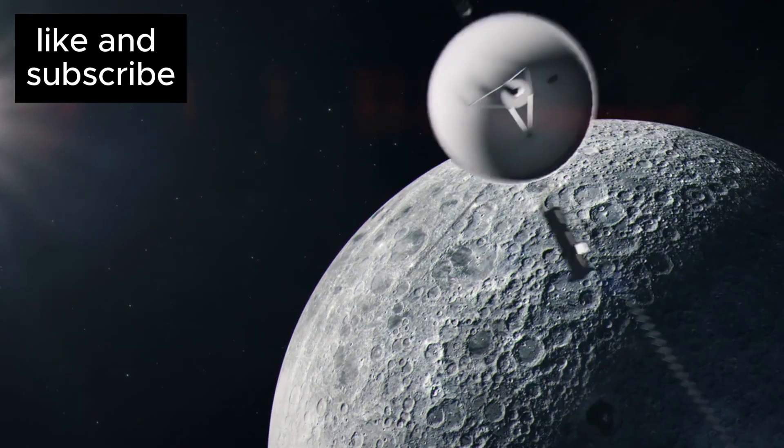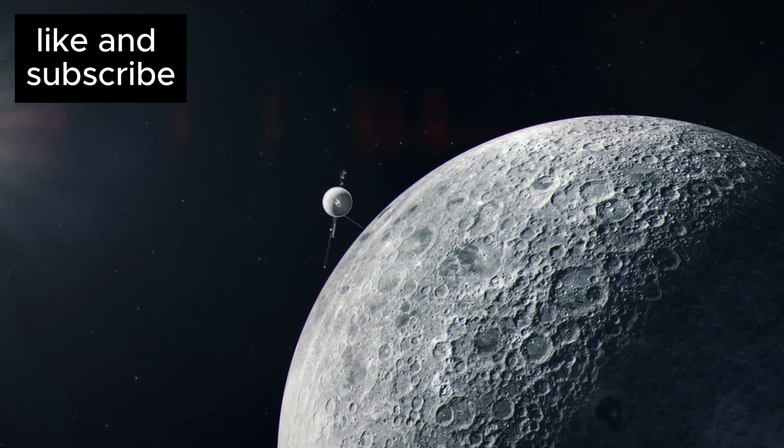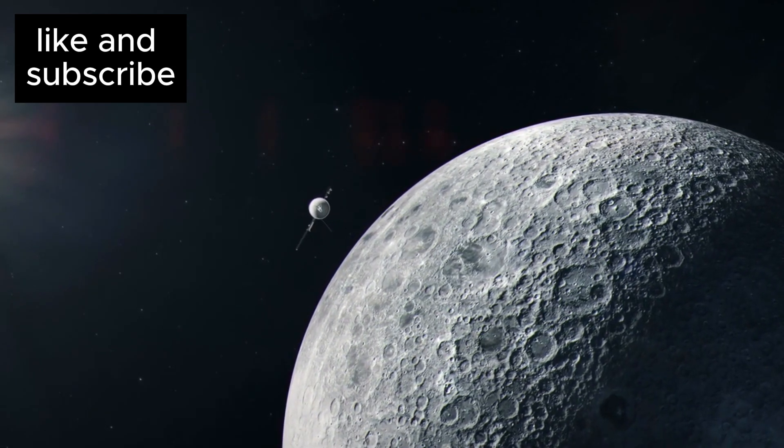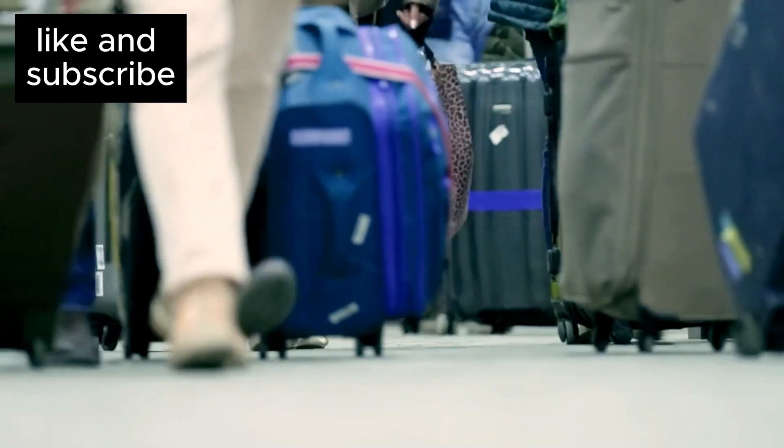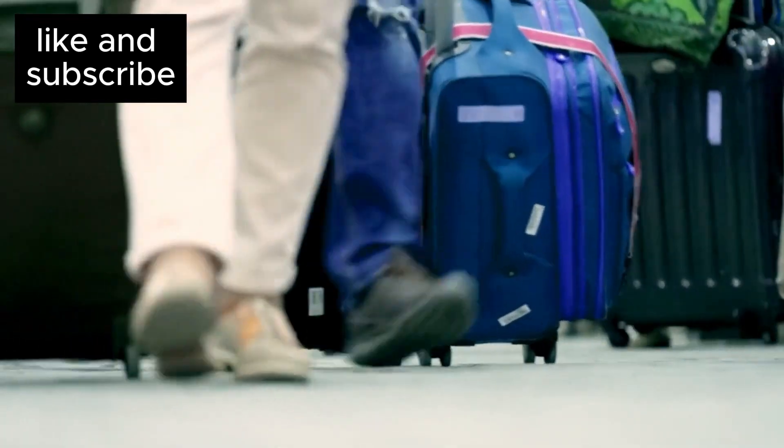With signals taking nearly 22 hours to travel to and from Voyager 1, any troubleshooting efforts were incredibly slow. The solution required careful coordination, and the use of old systems and manuals from the 1970s, as Voyager 1 was built decades ago.